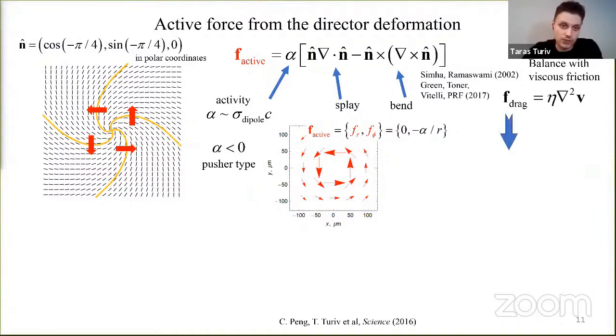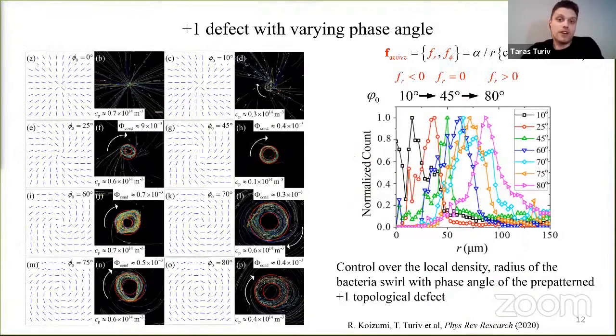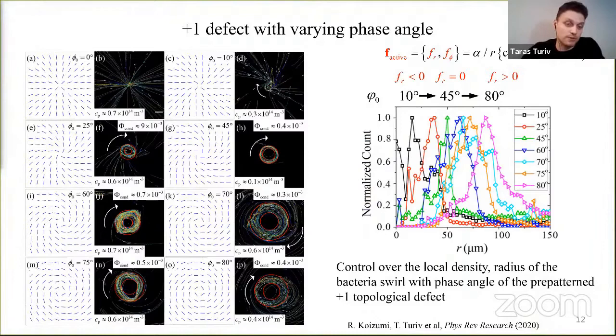Activity is proportional to the concentration of active units and the force dipole. But for simplicity, we consider it to be constant in our system. The sign of activity depends on the type of active unit and for pusher type is negative. And since we know explicitly the director field, we can plot the force vector field. And you can probably see the similarities with the qualitative picture. Now, by balancing active force and viscous drag force, we can calculate the velocity field, which again turns out to be very similar to experimental velocity profile. The polar components of the bacteria velocity coincide with the theoretical description as shown by fitting.